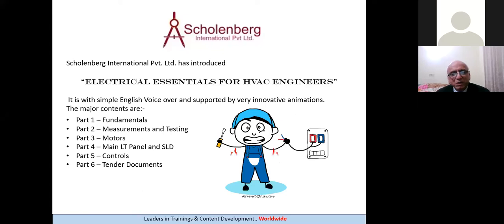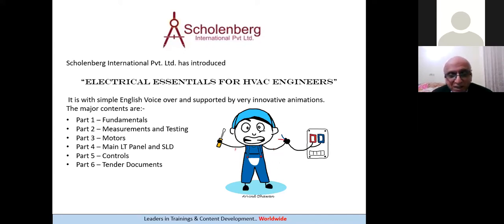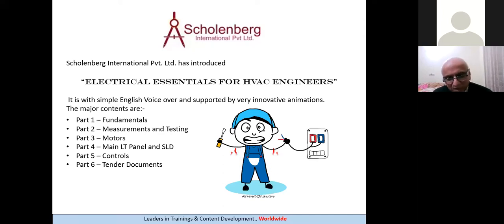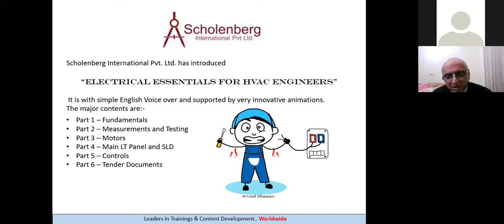Then comes the main LT panel. I have shown the main LT panel — it's a huge box, like a large Almirah. You have to know what's inside it. And the most important part in the construction area is the single line diagram. You must understand the single line diagram according to which the project is being executed. Reading a single line diagram is the biggest challenge for HVAC engineers — they fail to understand which line is going where, which part works what, and how the whole system is connected.